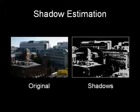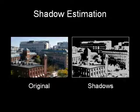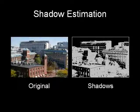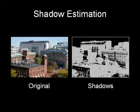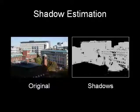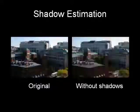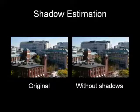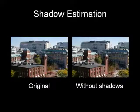We first estimate shadows from the images using the time-varying intensity profile at each pixel. Here we show a simple example of removing shadows from the original sequence.